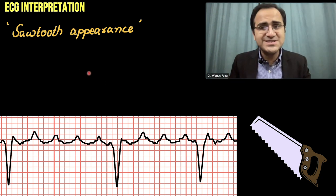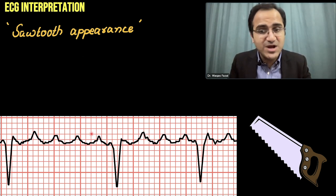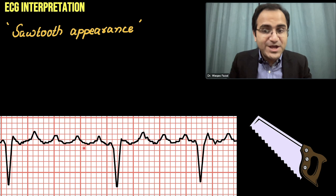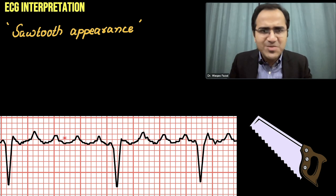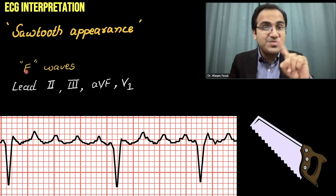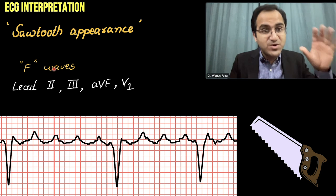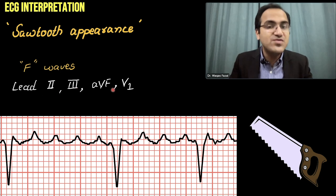Atrial flutter has a classical appearance on ECG: the sawtooth appearance, which is pathognomonic for atrial flutter. Ventricles contract at a slower pace while the atria produce many flutter waves that look like a saw tooth. These are not P waves — they are flutter waves written with a capital F. Remember, small f denotes fibrillatory waves. These flutter waves are most prominently seen in leads 2, 3, AVF, and V1.